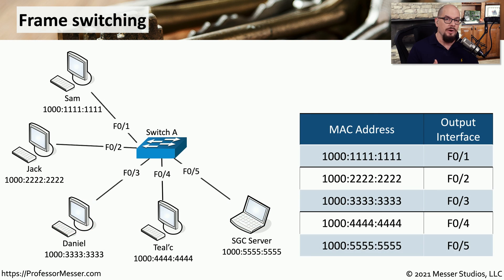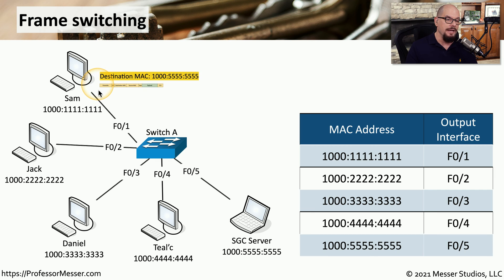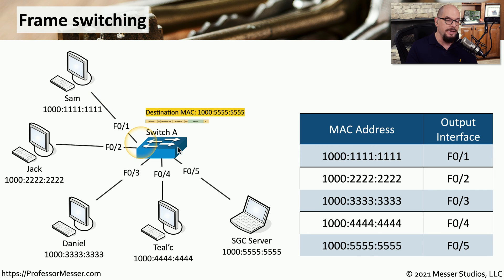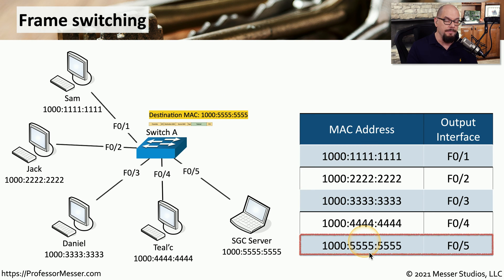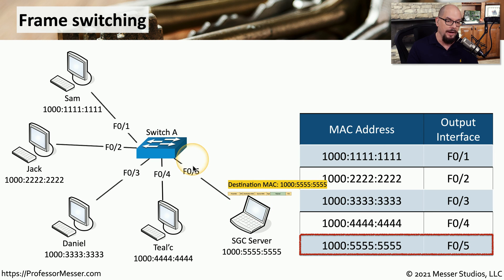This is the process that occurs every time the switch receives a frame and needs to determine where to send it. Even with multiple devices on the network, any time a frame is received the destination MAC address is evaluated and compared to the existing MAC address table. If there is a match, the switch identifies the output interface and sends that frame out that specific interface.